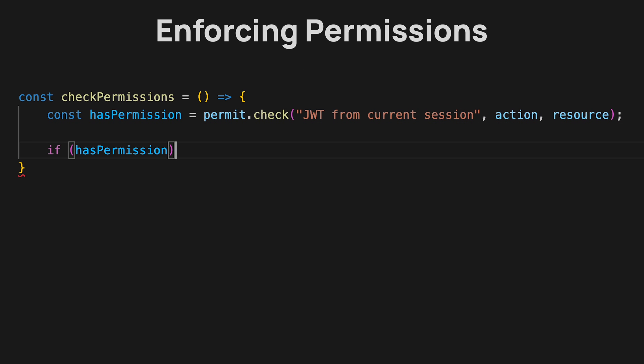The great thing is that when you decide someone on your team shouldn't have certain permissions, you don't need to create a pull request in the code to change the logic. You go into the Permit no-code editor, untick the permissions you don't want that role to have, save those changes, and it continues to work within your app. Permit is extremely scalable, allows granular permissions, and is really a great long-term solution.